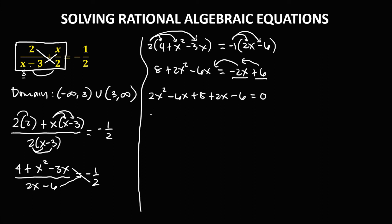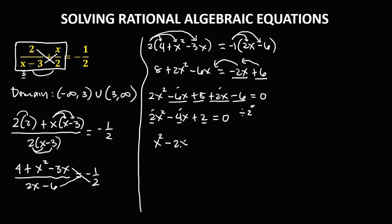Combining like terms: 2x squared, then negative 6x plus positive 2x gives negative 4x, then positive 8 minus 6 gives positive 2, equals 0. Since the coefficients 2, 4, and 2 are all divisible by 2, dividing through: 2÷2 = 1, so x squared; 4÷2 = 2, so minus 2x; 2÷2 = 1, so plus 1, equals 0.